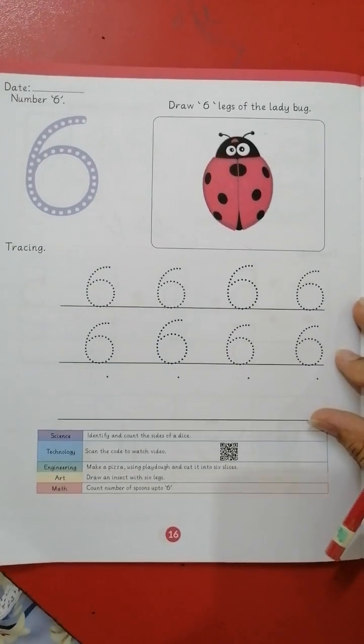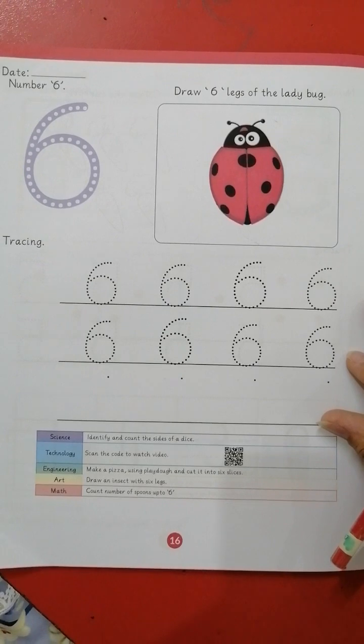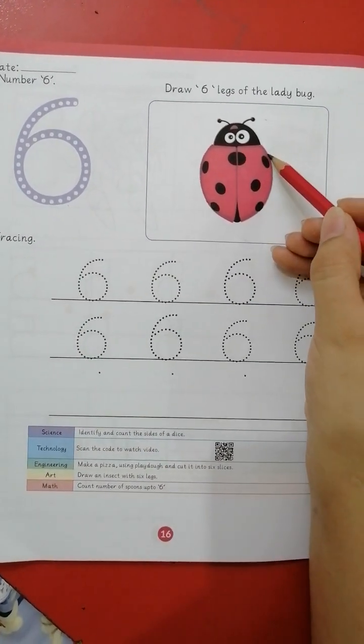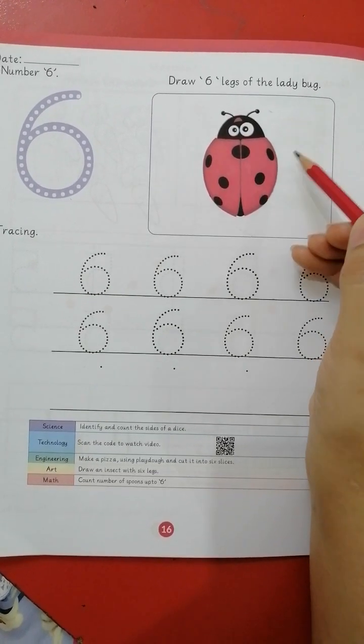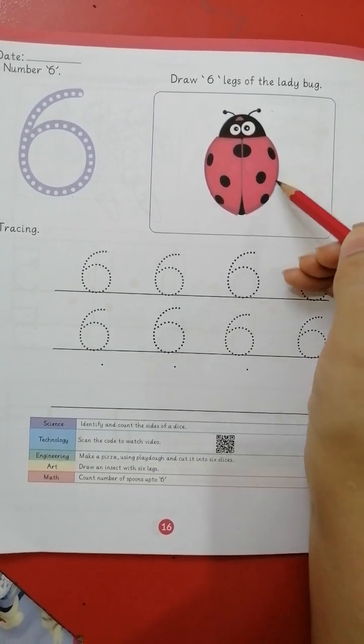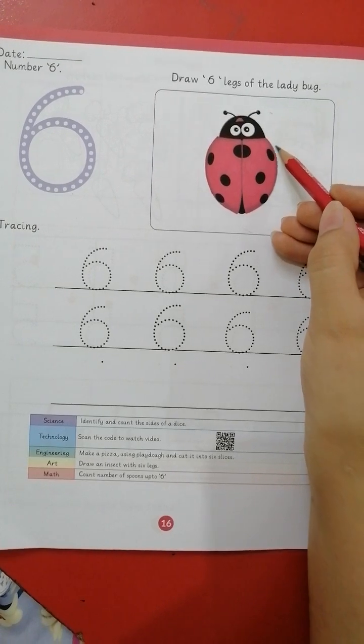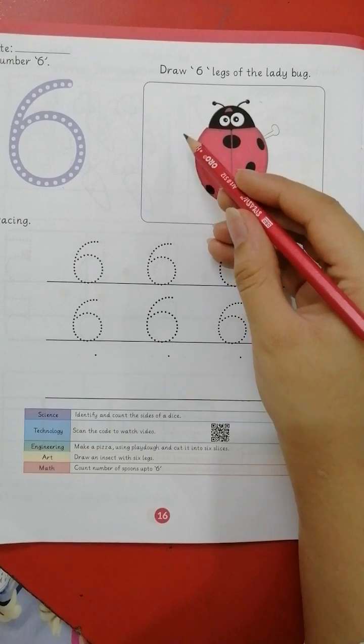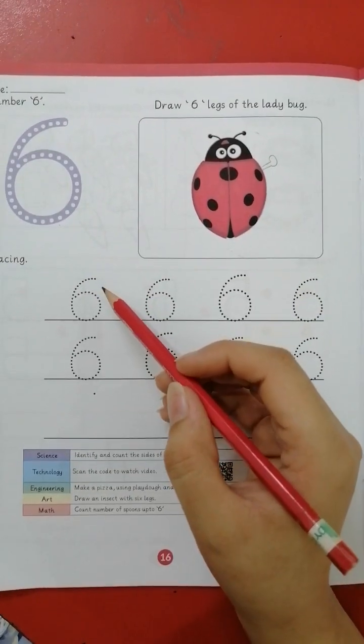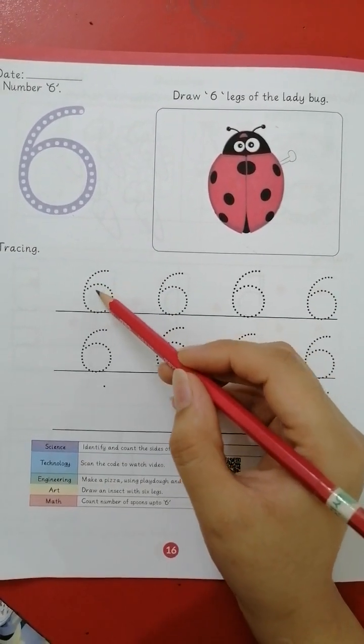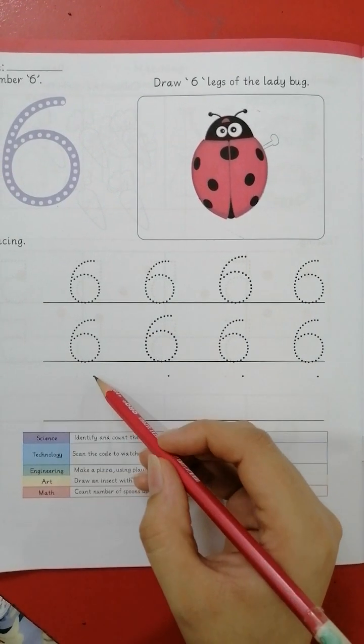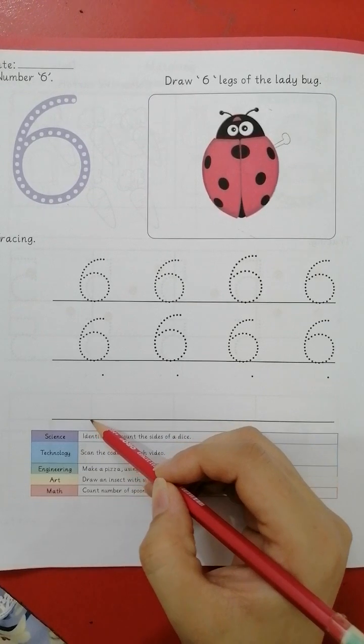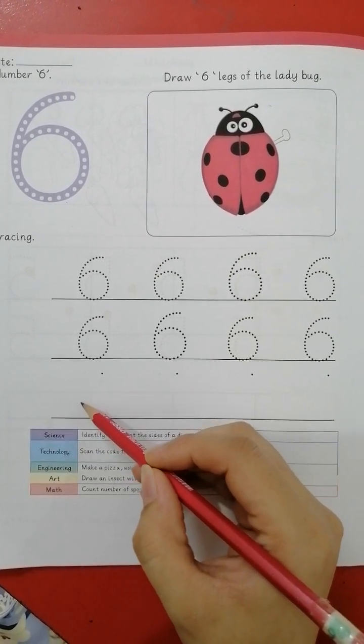Next we have number six. You have to trace it. And you have to draw six legs of ladybugs like this. Draw three here and three on this side. Then trace number six and write it independently. Make one big half a circle, go round and round, and a circle inside.